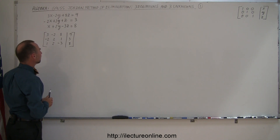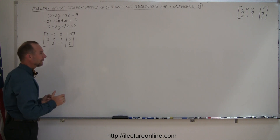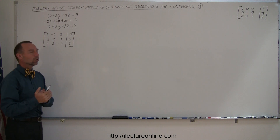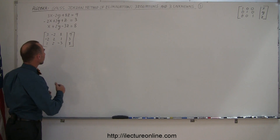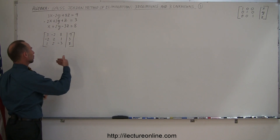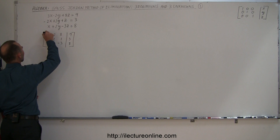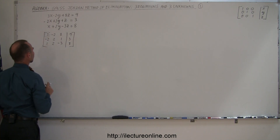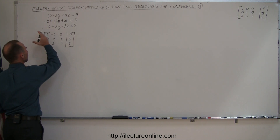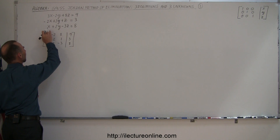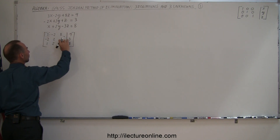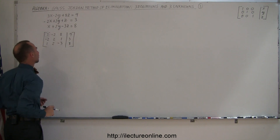How do we do that? We can add any two rows together, we can multiply any row by a number and add it to another row, and so forth. We're going to take the first diagonal entry and try to turn that into one first. We want to make each diagonal entry a one with everything else in that column zero, and then we have our solution.